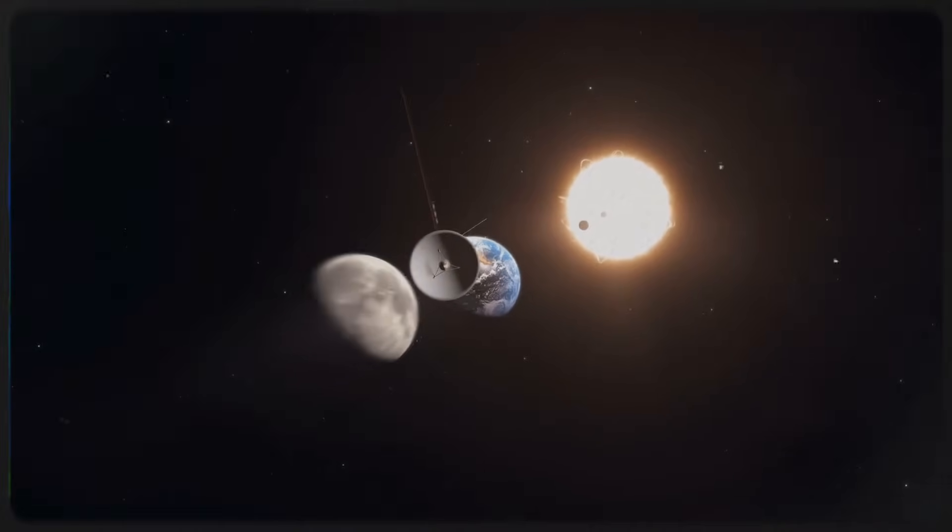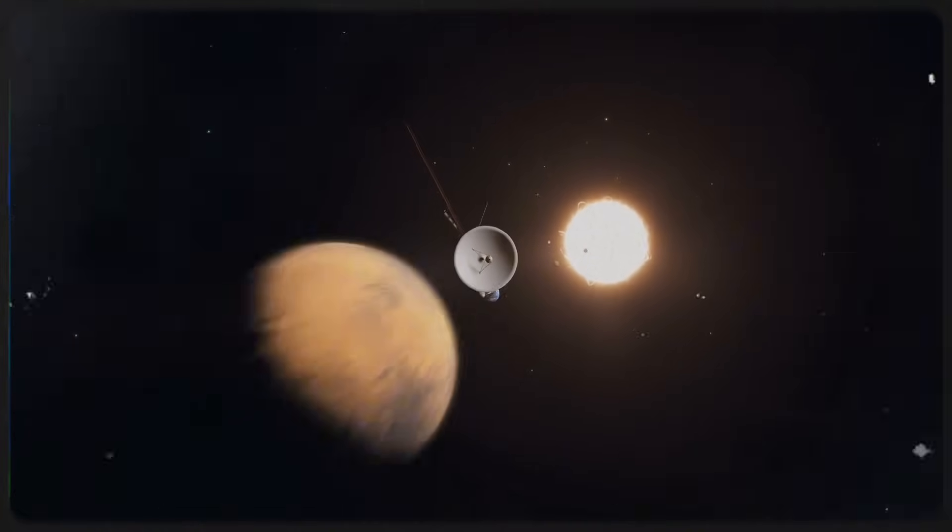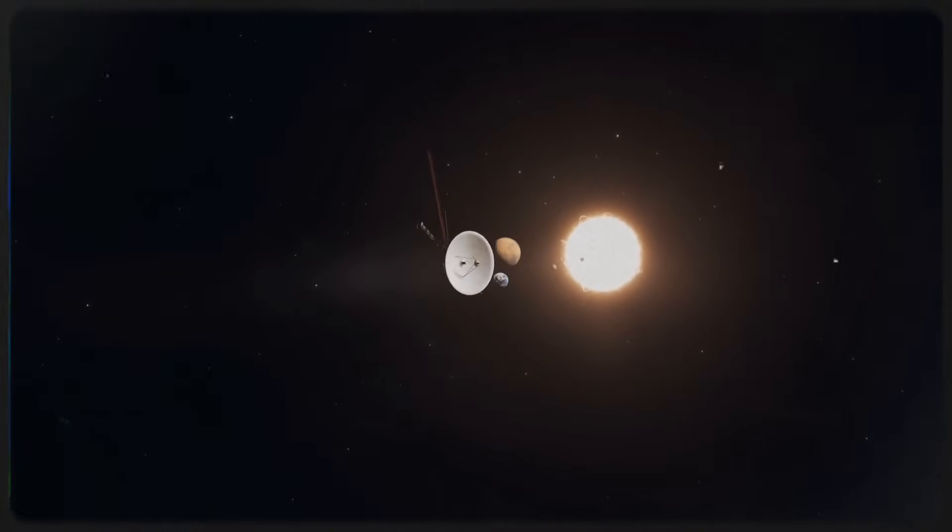NASA's Voyager 1 spacecraft recently re-established communication with Earth using a backup radio transmitter that had been dormant since 1981. Remarkably, this spacecraft, currently the most distant human-made object from Earth, was able to make contact after decades of silence from its backup system.